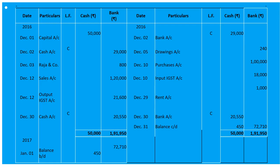On December 5th, withdrew cash from bank for private use — 'By Drawings' and amount under bank column. On December 10th, purchased goods for one lakh with IGST 18%, payment by cheque — 'By Purchases Account' one lakh and 'By Input IGST Account' 18,000 both under the bank column.